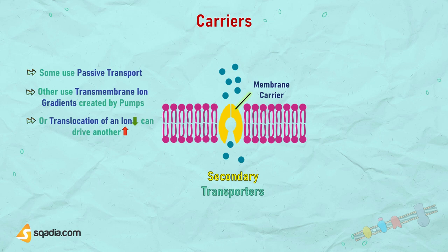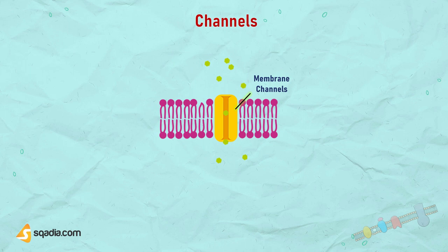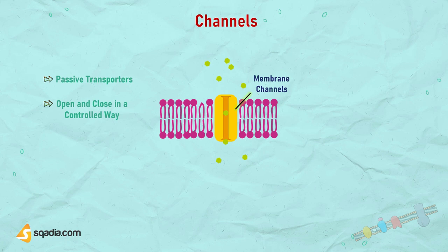Channels are like tiny doors in the cell membrane that are passive transporters, allowing certain ions to pass through. These channels can open and close in a controlled way. When they are open, they allow a lot of ions to move quickly across the membrane, driven by differences in electrical and chemical energy. This movement of ions through channels helps control the electrical potential across the membrane, and can create rapid electrical signals in cells like nerve and muscle cells.